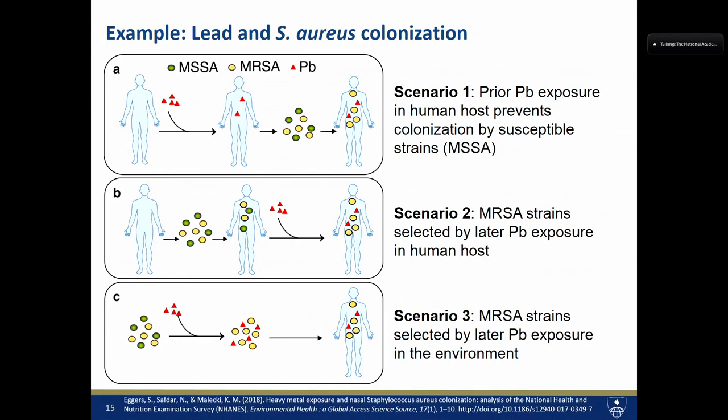Scenario two is that the person was colonized and then exposed to lead, which selected for MRSA. Scenario three — which I think is important for us to consider — is that maybe the lead was in the home, in the environment, or in the water coming into the house, and was therefore impacting Staph aureus that can be part of a biofilm in a water system. So perhaps MRSA is selected in the environment and then the person is exposed through that route from the home environment.